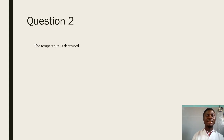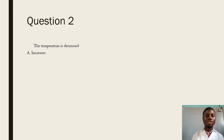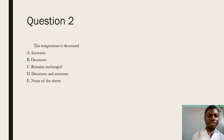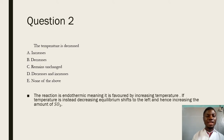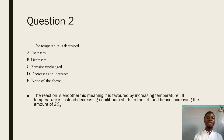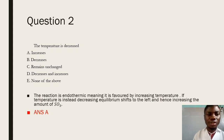Question 2 says the temperature is decreased. For the breakdown reaction of sulfur trioxide, the reaction is endothermic. For an endothermic reaction, the forward reaction is always going to be favored by an increase in temperature, because an endothermic reaction absorbs heat from the surroundings. If the temperature of the system is instead decreased, the equilibrium position is going to shift in a direction that tries to increase the temperature, which is going to be the backward reaction. As a result, the amount of sulfur trioxide is going to increase, and the answer is A.